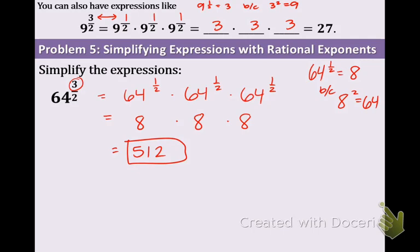A couple other little examples that I'd like to show you briefly because the more practice you get, the easier these will be. 27 to the 2 thirds, you can write that as 27 to the 1 third times itself. There's only two of them because of that numerator in the exponent. And 27 to the 1 third, we talked about this on the last slide, is 3. So you just replace it and you get 9.